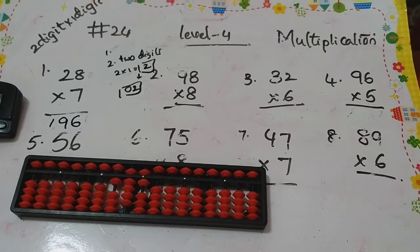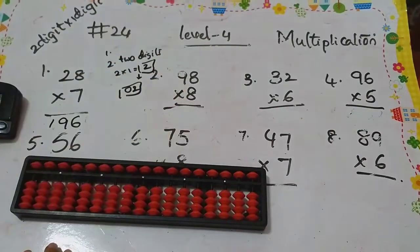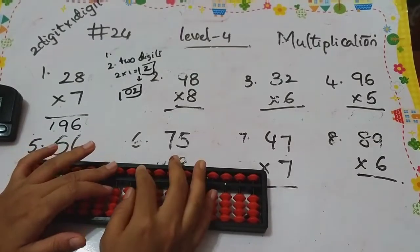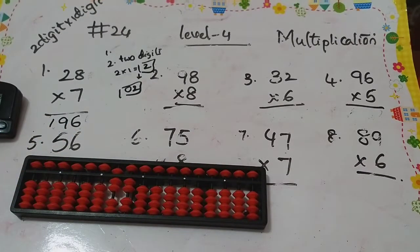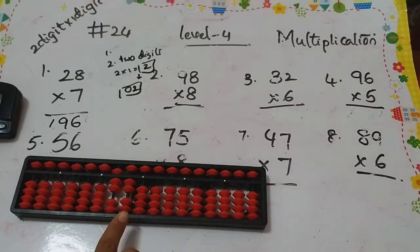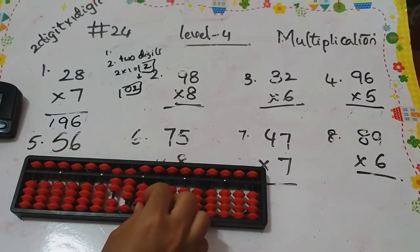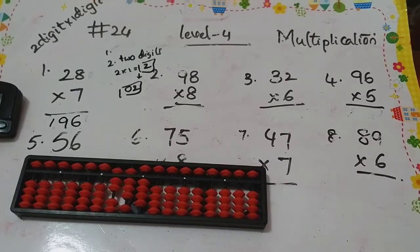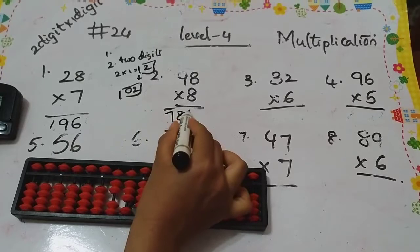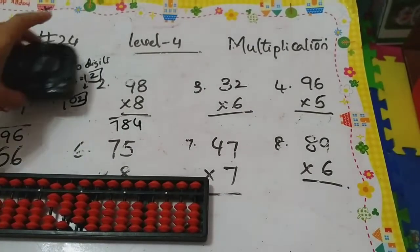Next: 98 times 8. How to do this one? First we have to multiply these two: 9 eights are 72. How to keep on our abacus? 72. Good job. Next one: 8 eights are 64. It's a 2-digit number, so I have to keep it here: 64. So 6 and 4.